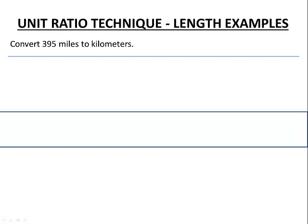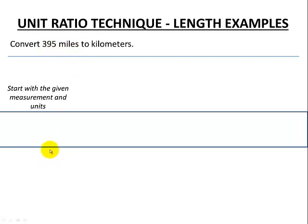Here's our lesson on the unit ratio technique. The first examples we're going to do are length examples. Our example is converting 395 miles to kilometers. So let's go through our technique. We're going to start with the given measurement and its units, so we need to start with the 395 miles.